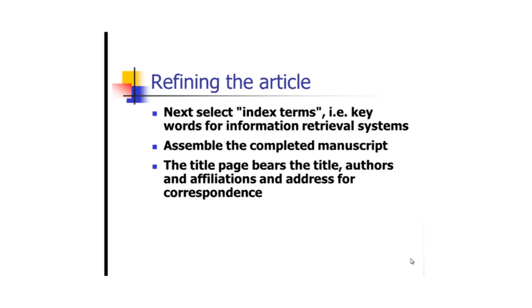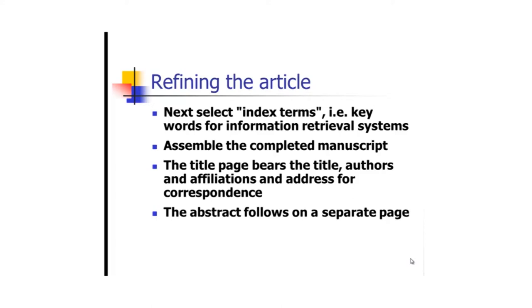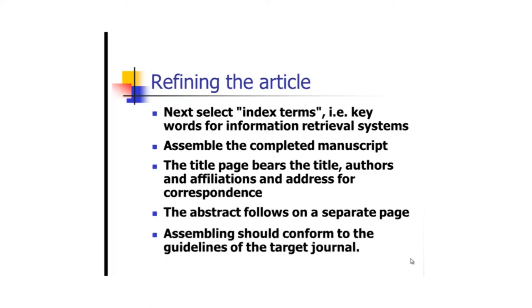The title page bears the title, authors, affiliations, and address for correspondence. There will usually be a single corresponding author who does not necessarily need to be the first author — it is any author who can answer questions and provide information if needed by the editor. In most circumstances, the corresponding author is the first author, since they take full responsibility and have read the article many times. The abstract follows on a separate page, and you assemble the article based on the instructions to authors. At this point you will have the second draft.